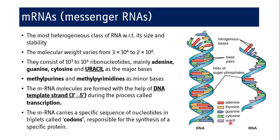Thymine in DNA is replaced by uracil in RNA. Methyl purines and methyl pyrimidines are minor bases found in RNA but not in DNA — these derived purines and pyrimidines are present in RNAs. The mRNA molecules are formed with the help of a DNA template strand during the process called transcription. The template strand has a polarity of 3' to 5' end, which we have discussed in detail in the previous session on the structure of DNA.